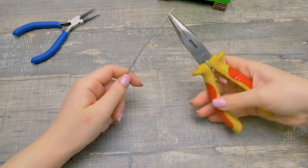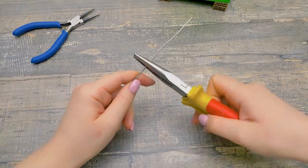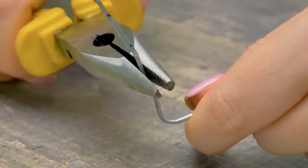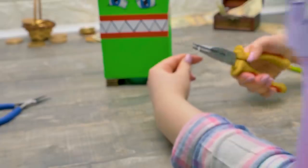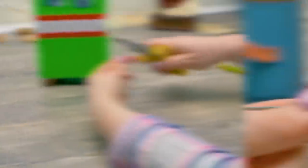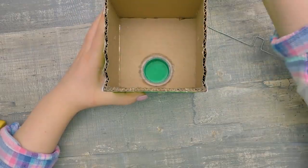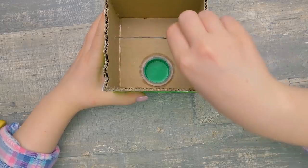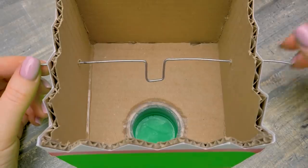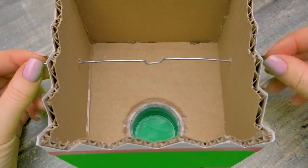Now we can start making the mechanism for our automatic money box. I need to bend this wire a few times. Be careful with pliers, guys. It needs some effort. This is what we get. Now I need to secure the wire inside the money box in the openings I made in advance. There you go! Looking good!